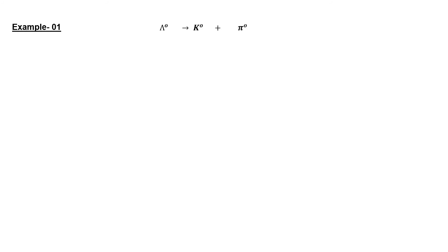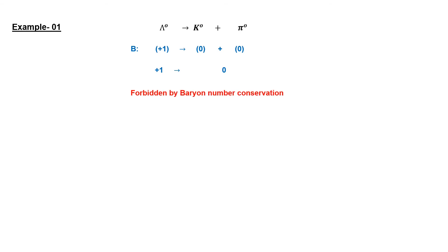Consider a case where lambda is decaying into a kaon and a pion. In this decay reaction, lambda is a baryon particle having baryon number +1, while the kaon and pion are non-baryonic particles having baryon number 0. Since the baryon number is not conserved in this reaction, this decay reaction is not allowed according to baryon number conservation.